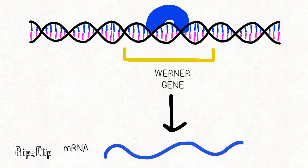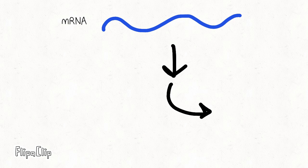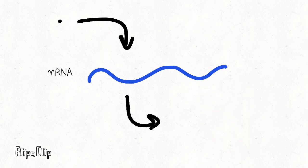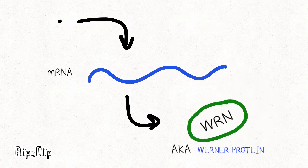This genetic information is then sent in the form of mRNA to the ribosomes, where WRN, also known as the Werner protein, is created.